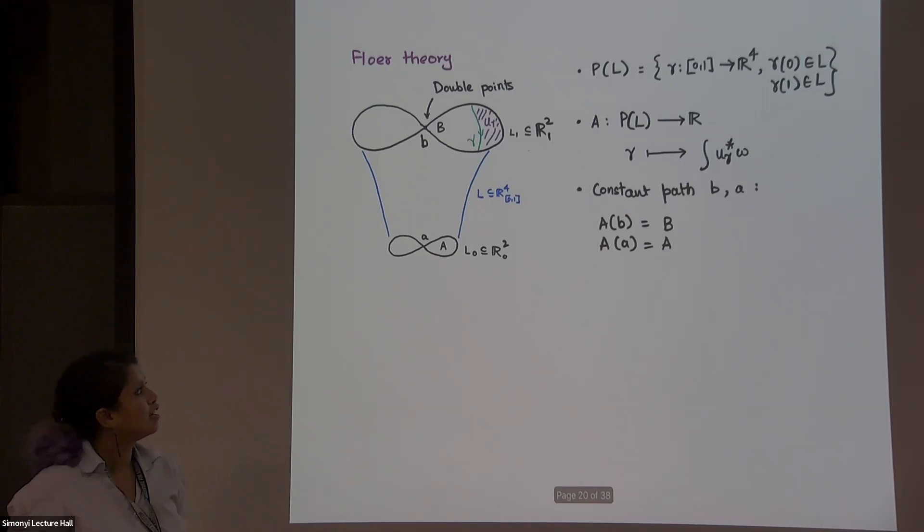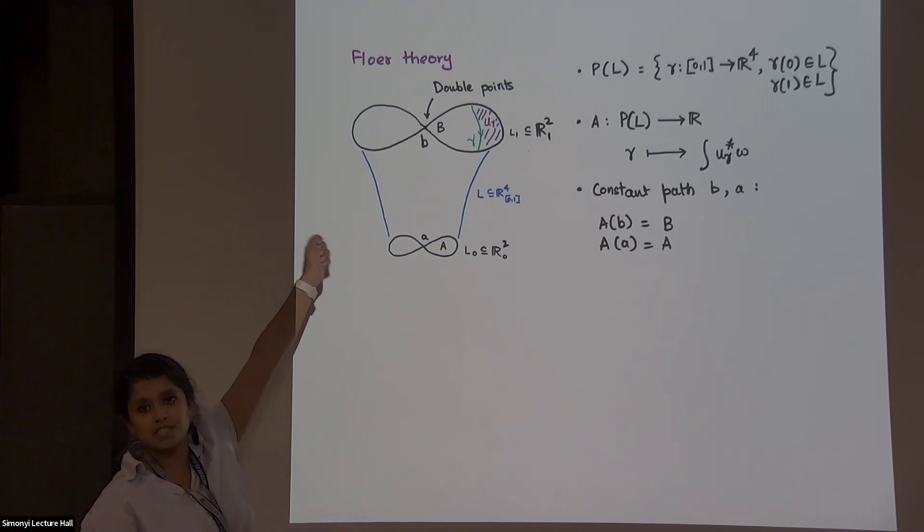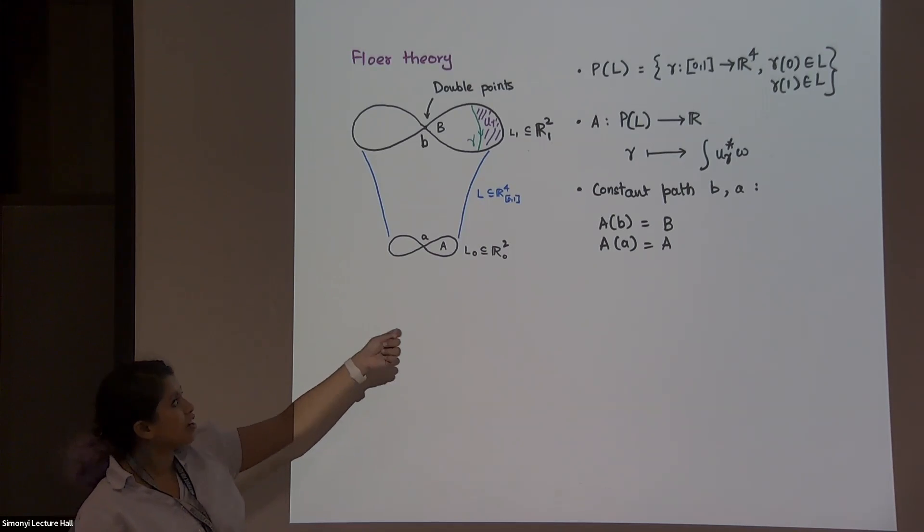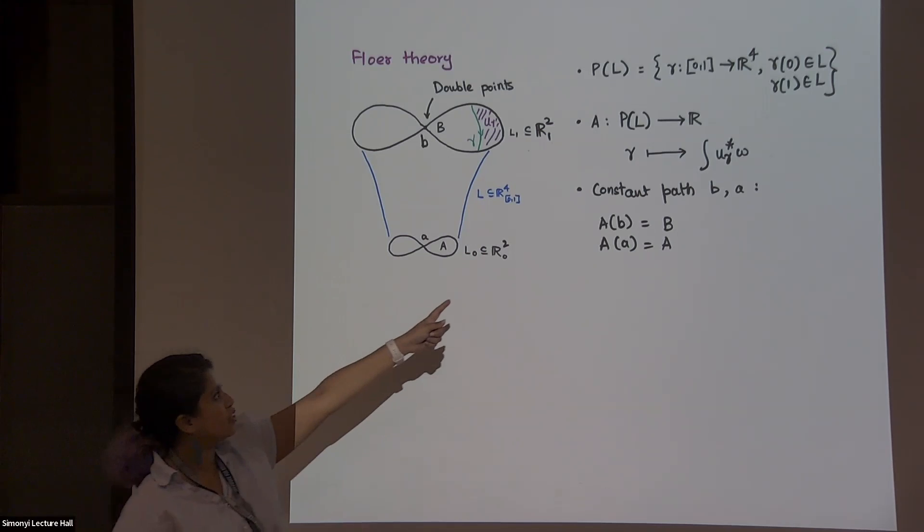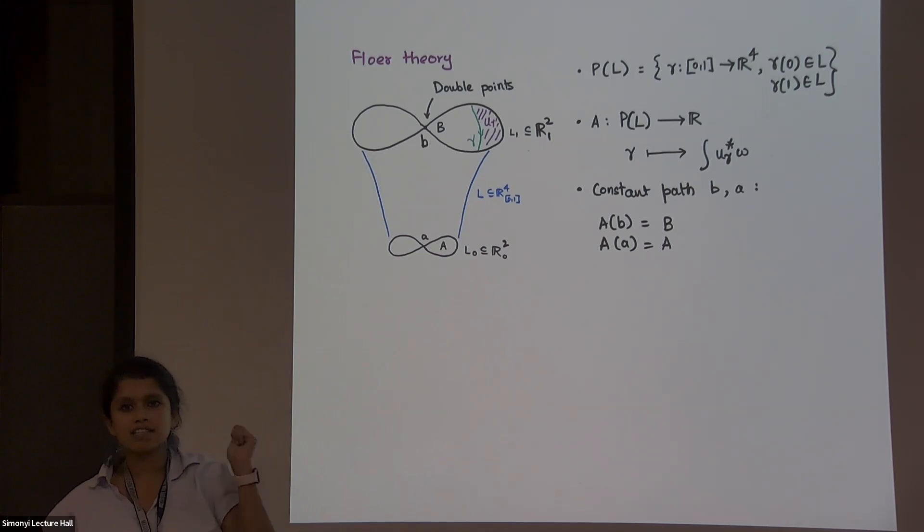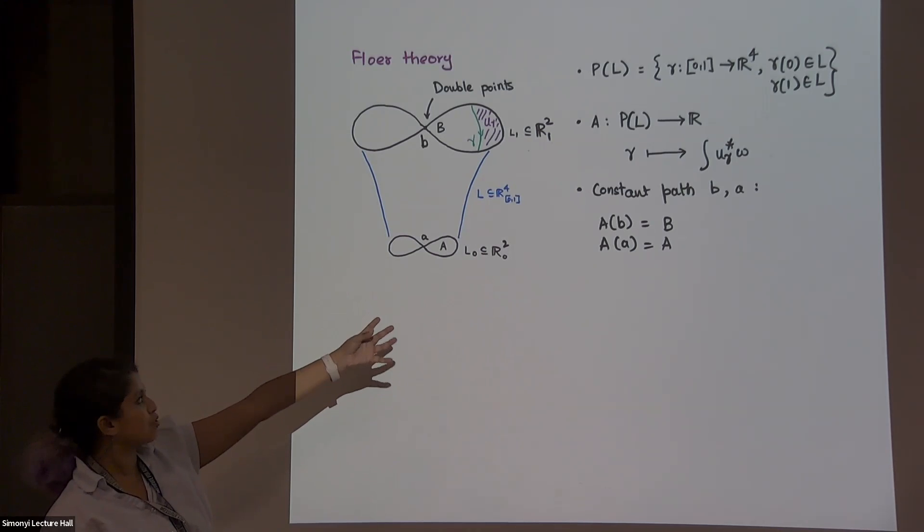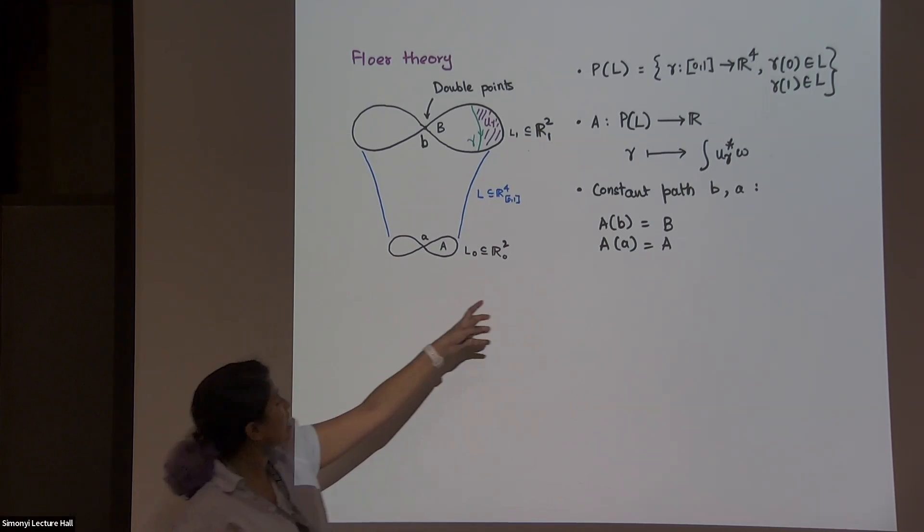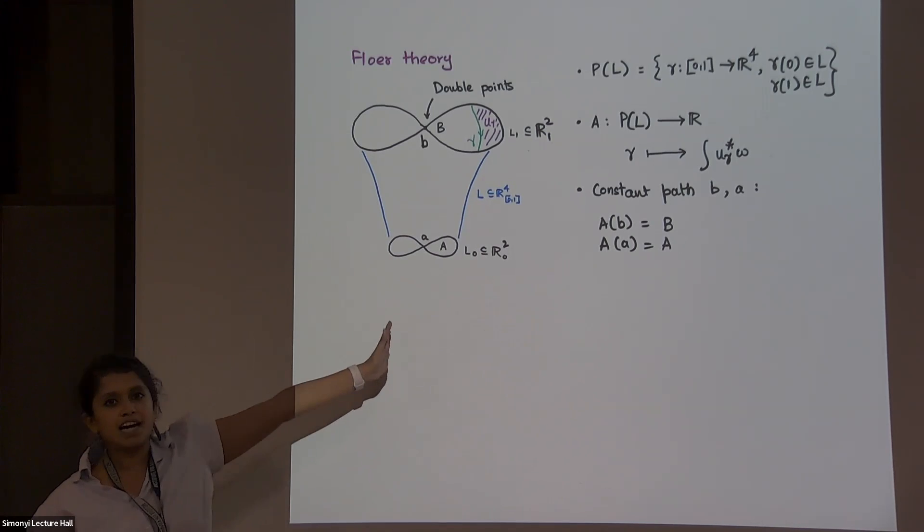Well, this gives you a nice function if you assume nice things about your Lagrangian. And notice that if you have a constant path, which is here, the intersection points B and A, the constant path, the u gamma for that constant path is the entire disc. And so the area of B and A, the quantities capital B and capital A that I was comparing sometime back.